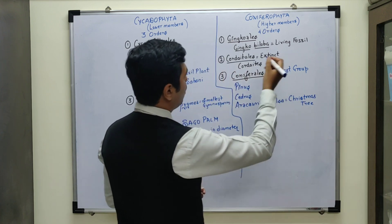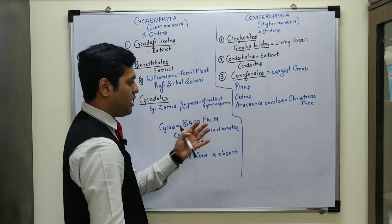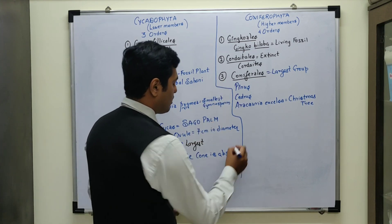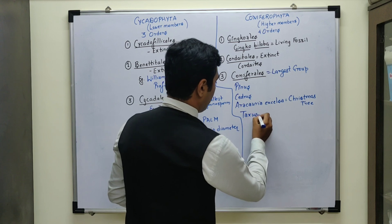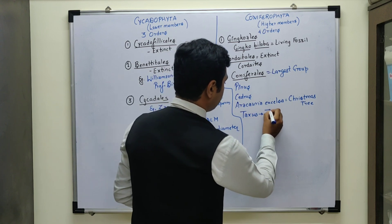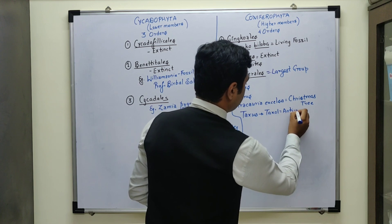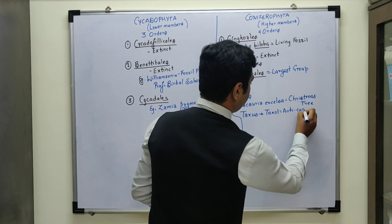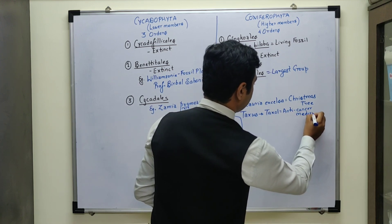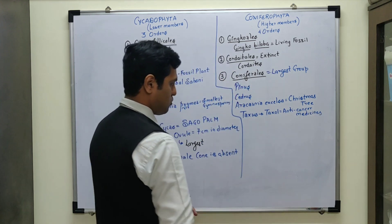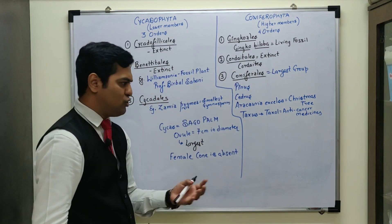Apart from Pinus and Cedrus, Araucaria excelsa is actually known as the Christmas tree, so the Christmas tree belongs to Gymnospermae under Coniferophyta, order Coniferales. Another example is Taxus — from this plant, Taxol medicine has been prepared, which is an anti-cancer medication. Another example is Juniperus virginiana.